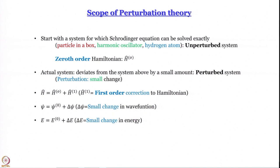If the unperturbed system has an energy of 10 units and the perturbed system has an energy of 50 units, then perturbation theory will not work, because δE becomes greater than or comparable to E⁽⁰⁾. For the rest of this module, we will try to build an expression for δE and δψ. This δψ can be written as a linear combination of the ψ⁽⁰⁾ wave functions.